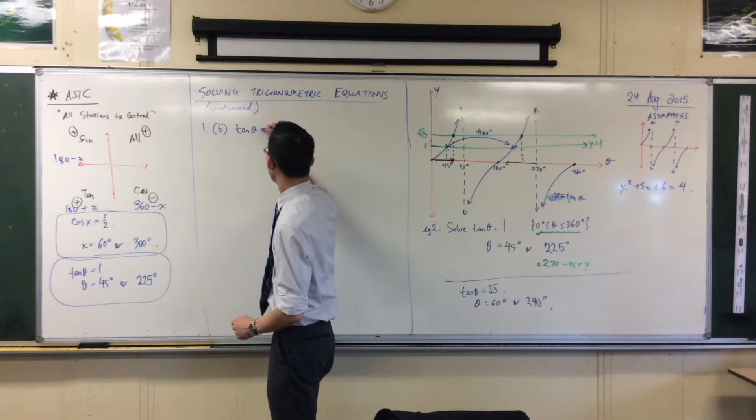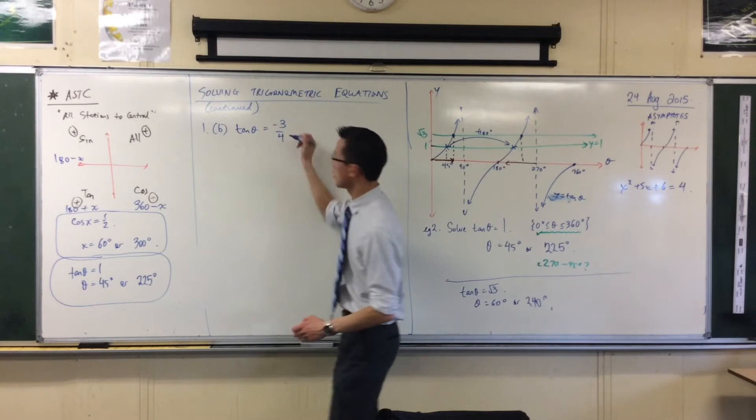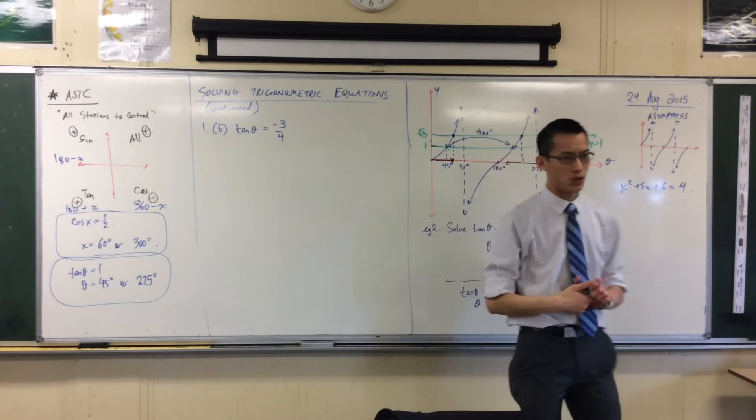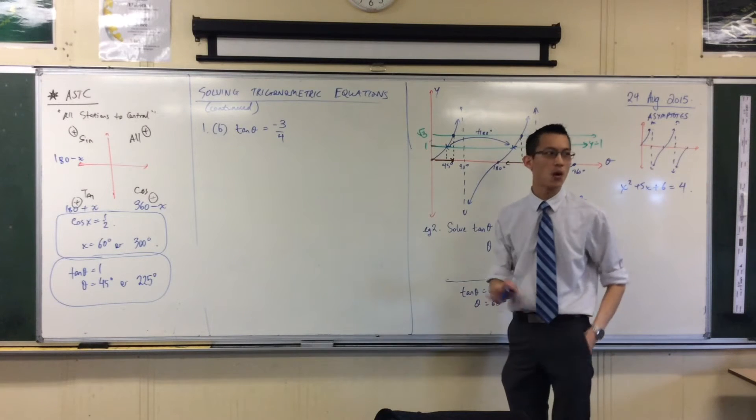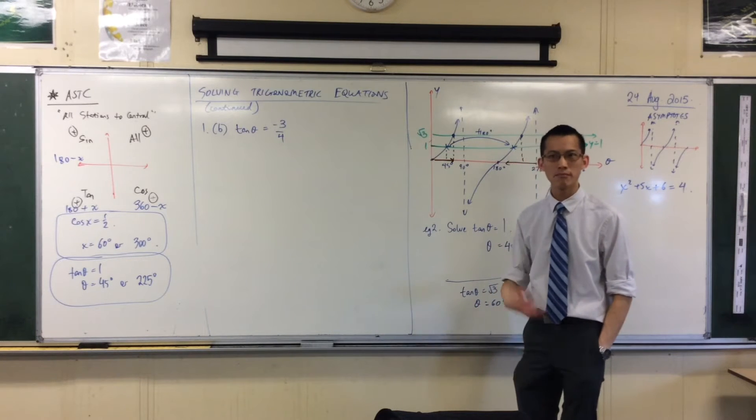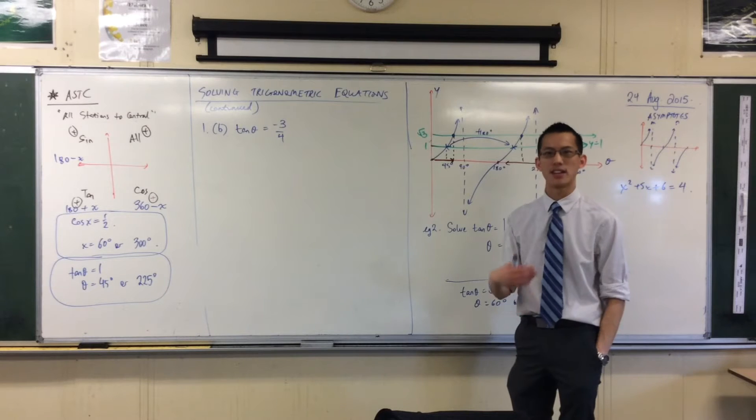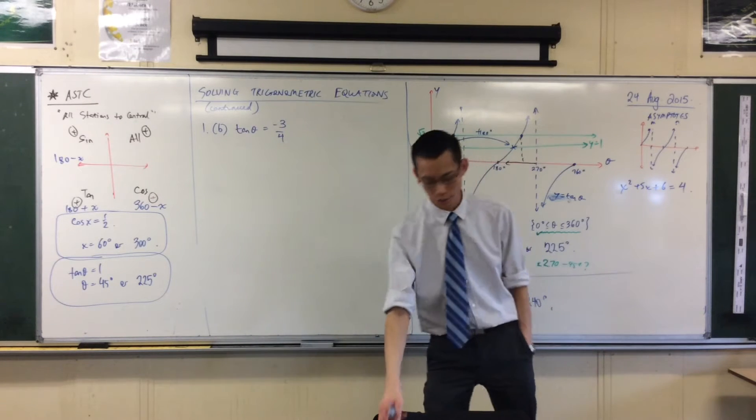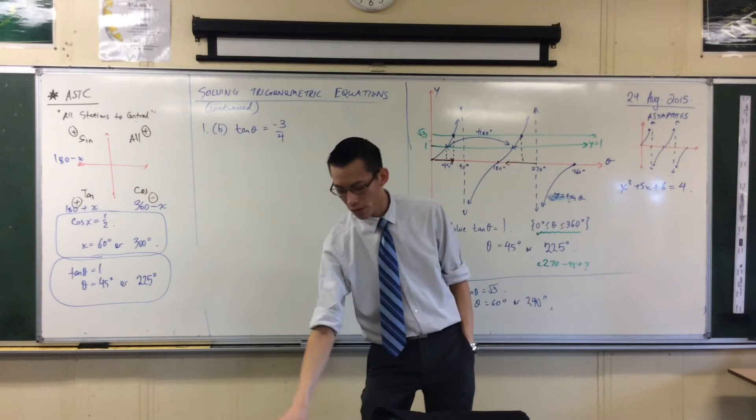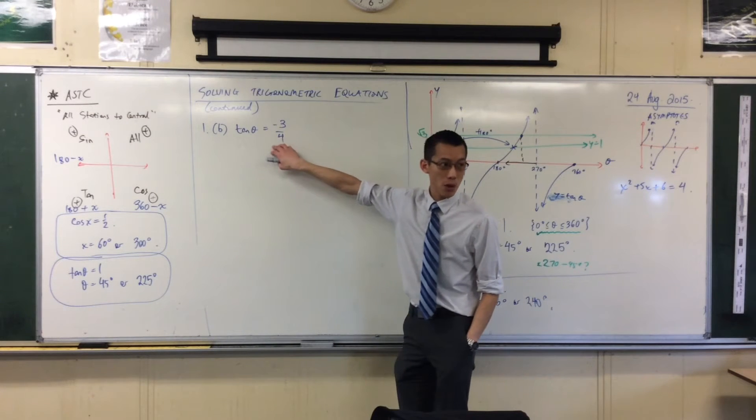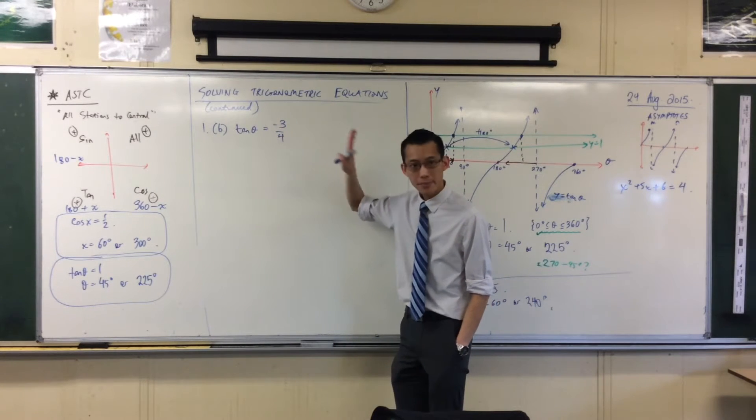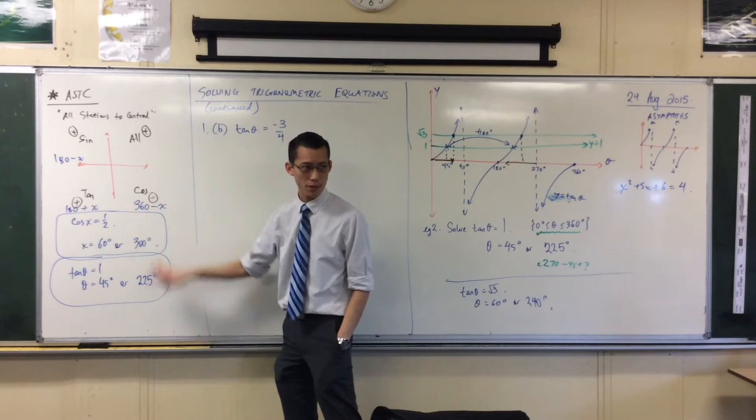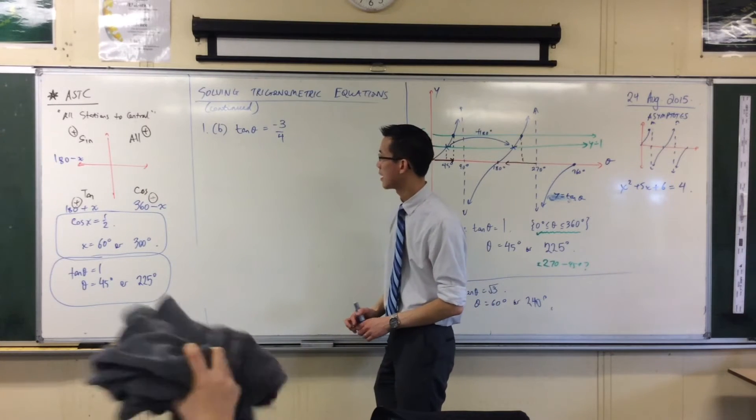Tan theta equals negative 3 quarters. Now I'll just save you some time right now. 3 quarters is not one of our nice exact value angles. So we're going to get some, not 30 or 45 or 60. It's going to be some weird angle. So let me walk through how this is going to arrive at a solution. I'm going to go through this same process, but I will walk you through nice and slowly.